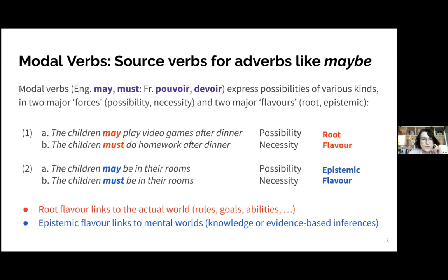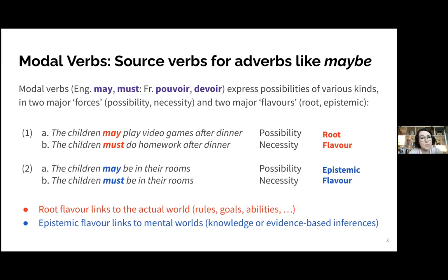That differs from the epistemic uses of these modals. So: 'Where are the kids? The children may be in their rooms' or 'the children must be in their rooms.' Here we give a likelihood estimation — either a weaker one or a stronger one — about what we think is true based on our knowledge or evidence. These epistemic uses are speaker-oriented inferences.